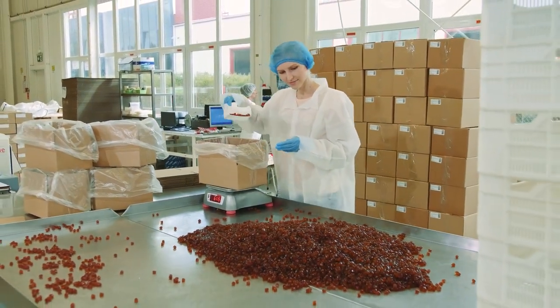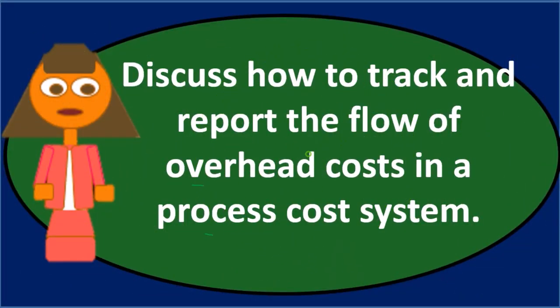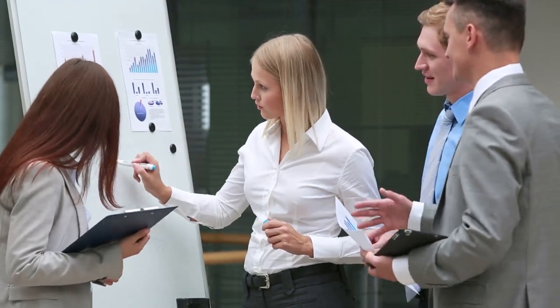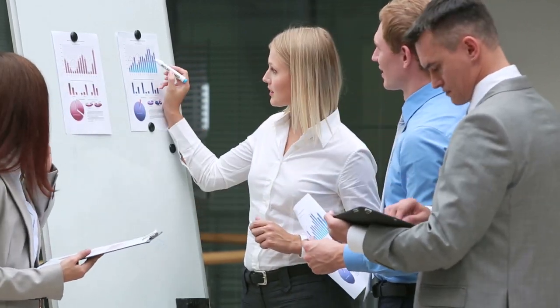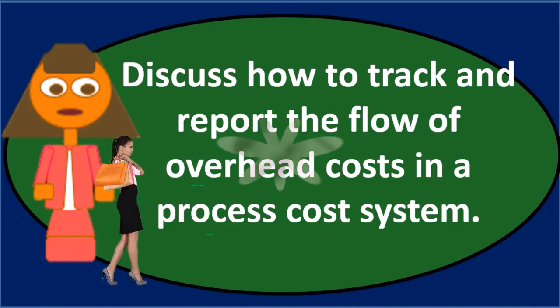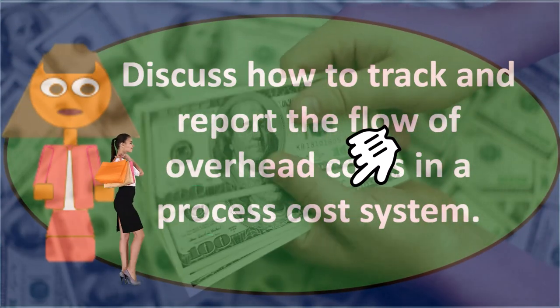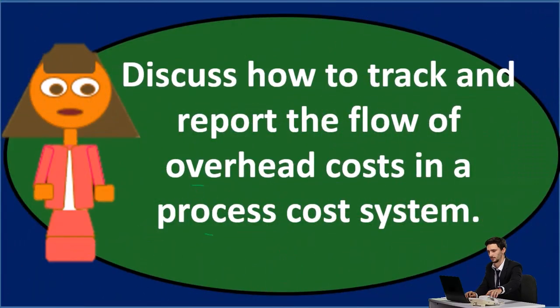For example, depreciation on the factory — we don't know exactly how to break it out between processes, so we put it into overhead. Overhead will be included in finished goods, but first we put this information into overhead. Journal entries typically involve a debit to overhead and a credit to the cost items. In a manufacturing context, these costs that we'd normally expense in a service business instead become part of inventory, flowing into overhead before being applied to work-in-process.